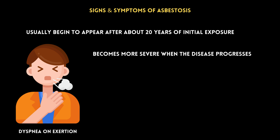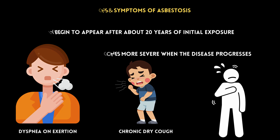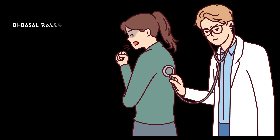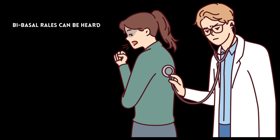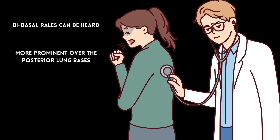Patients may also have a chronic, dry cough. If the cough is productive, concomitant bronchitis or a respiratory tract infection should be suspected. In advanced cases, patients may also complain of chest discomfort. On auscultation, bibasal rales can be heard, which are more prominent over the posterior lung bases.